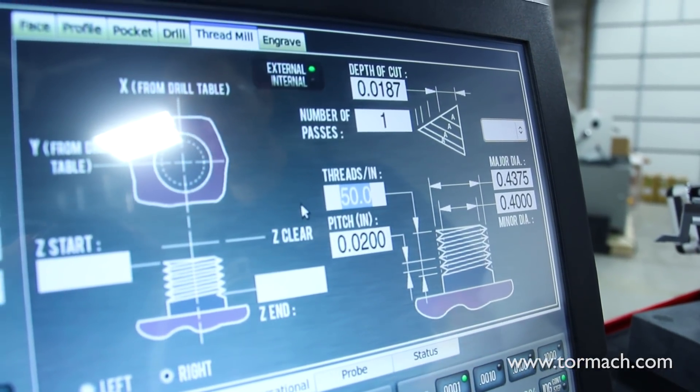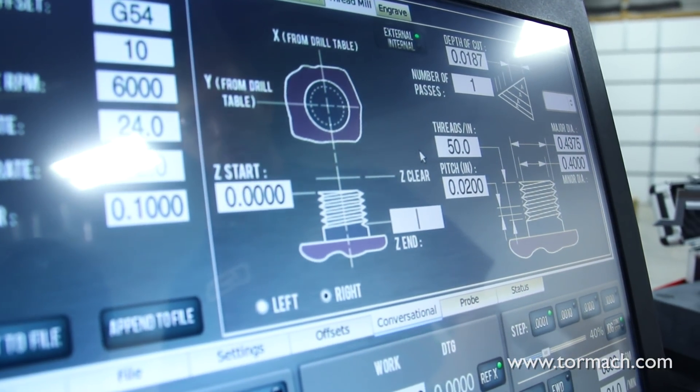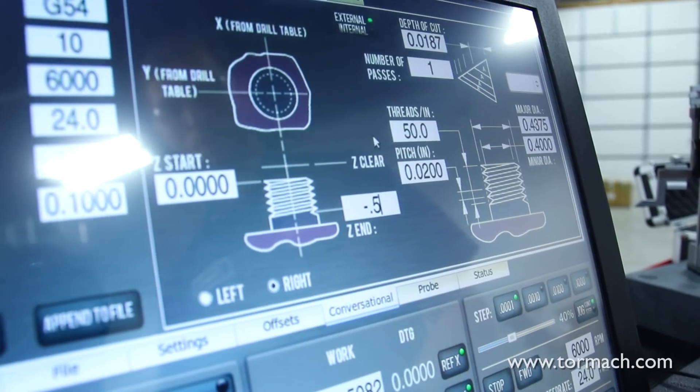That ends up being 50 threads per inch. Our Z start position again will be zero, and our end position will go down to the same half inch.